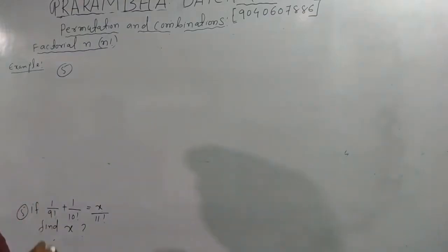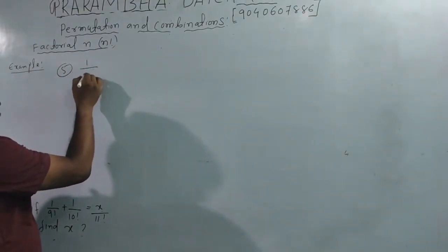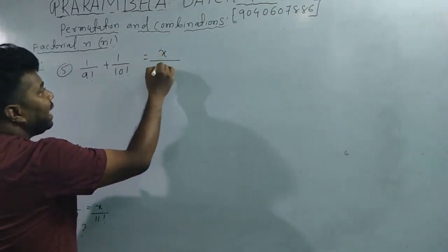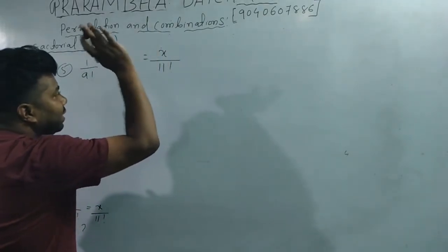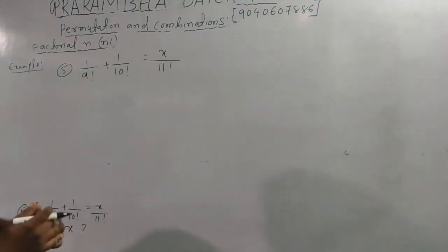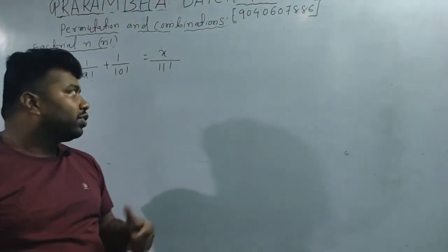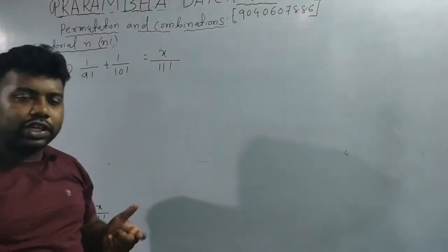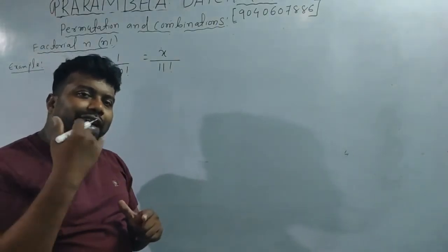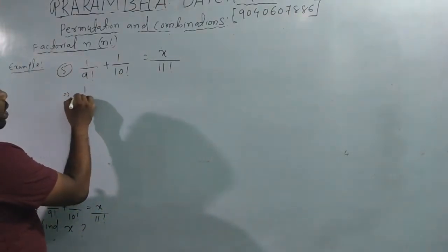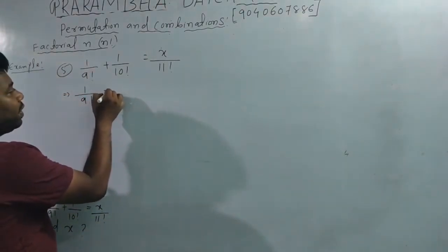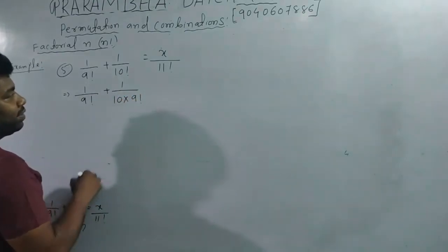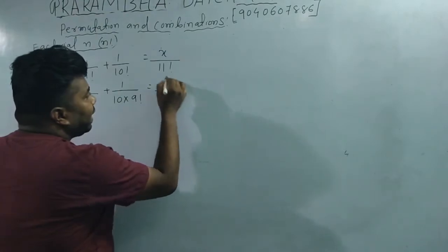Last question: 1 divided by 9 factorial plus 1 divided by 10 factorial equals x divided by 11 factorial. We need to find x. We rewrite: 10 factorial = 10 × 9 factorial, and 11 factorial = 11 × 10 × 9 factorial. Taking 9 factorial as common on the left side.